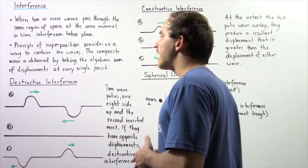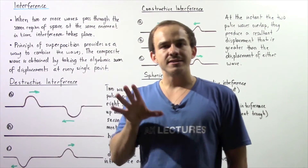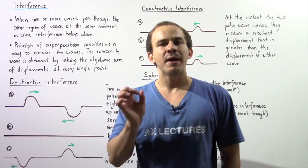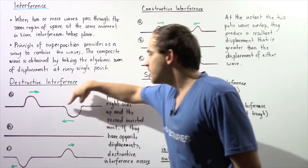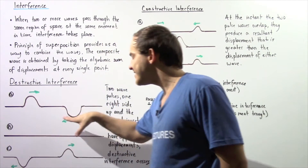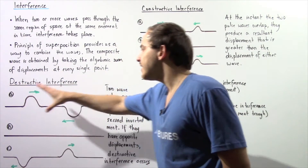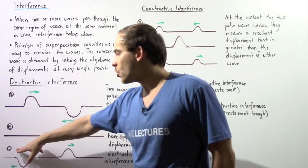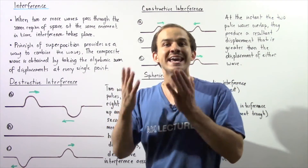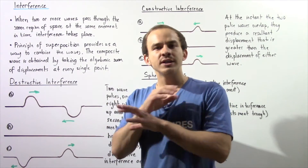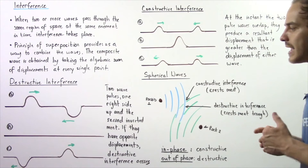We must recall an important part of the principle of superposition: the waves are independent of one another. After destructive interference takes place, each wave will continue to move in the same exact direction as before the interference occurred. Even though for some given moment they overlap and cancel each other out, they will continue moving in the same directions as shown in part C.